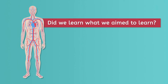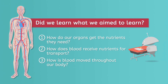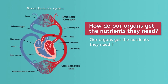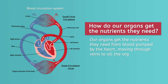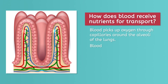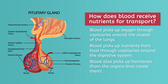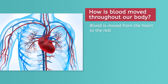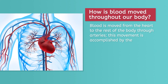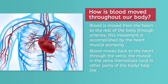To conclude, let's check in with our learning objectives. How do our organs get the nutrients they need? How does blood receive nutrients for transport? How is blood moved throughout our body? If you're following along in your guided notes, pause this video to jot down your thoughts on these questions. Our organs get the nutrients they need from blood pumped by the heart, moving through veins to all the organs in the body. Blood picks up oxygen through capillaries around the alveoli of the lungs, and picks up nutrients from food through capillaries around the digestive system. Blood also picks up hormones from the organs that create them. Blood is moved from the heart to the rest of the body through arteries by the heart muscle pumping, and moves back to the heart through the veins, aided by muscles in the veins and other parts of the body.